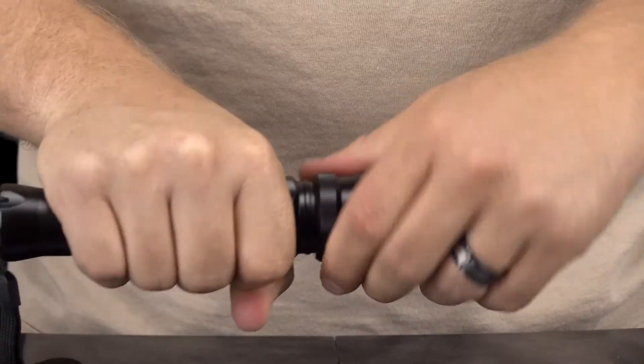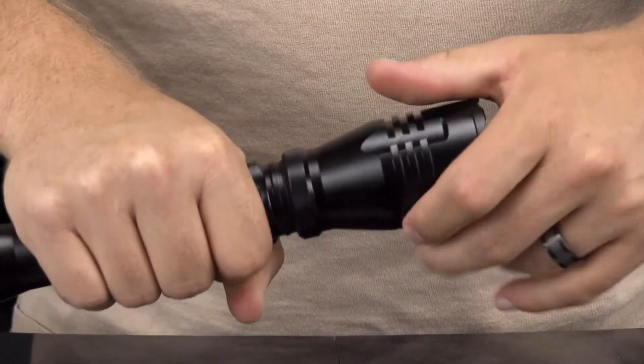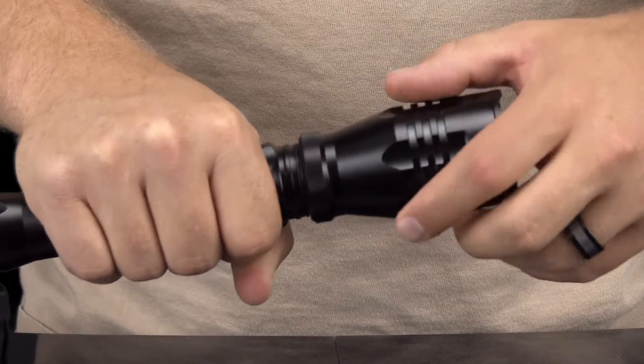Be sure to grip these two points only, as gripping further down on the light housing will simply unscrew the internal charge port.